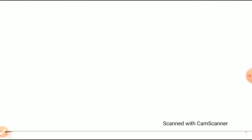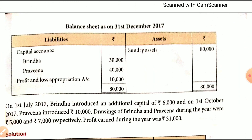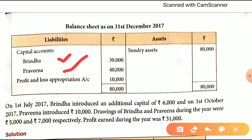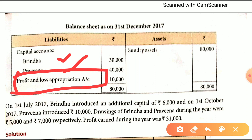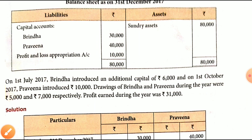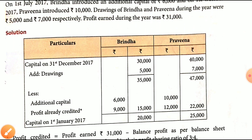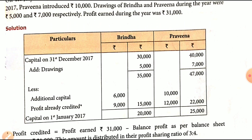Let's see the Balance Sheet as at 31st December 2017 for Brinda and Praveena. We will see the additionals and the Profit and Loss Appropriation account. Brinda and Praveena are the two partners. Let's open the calculation.